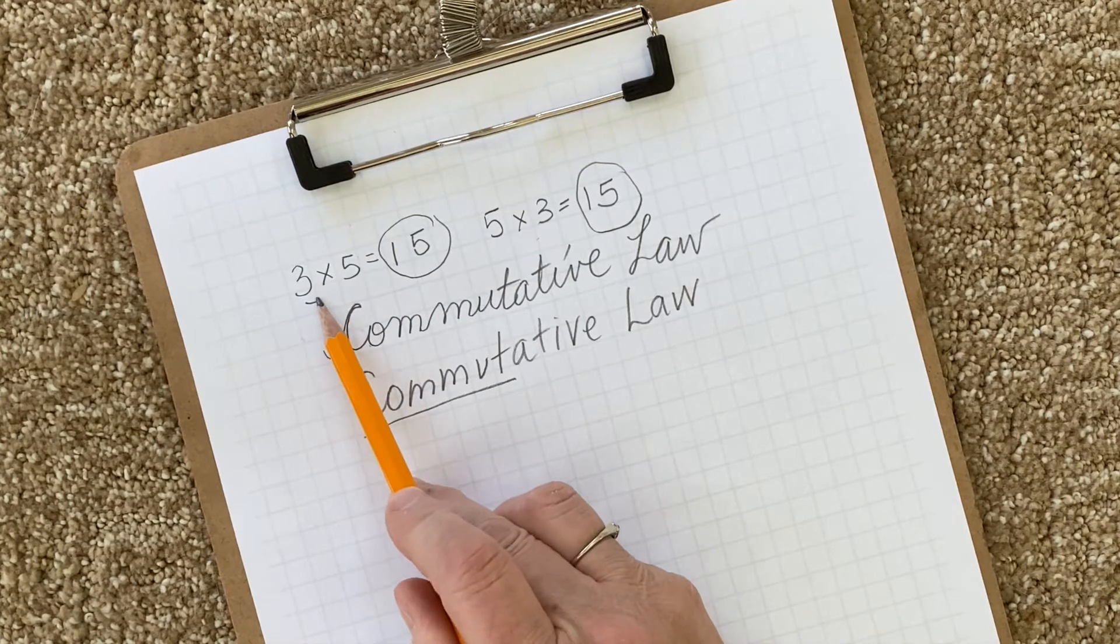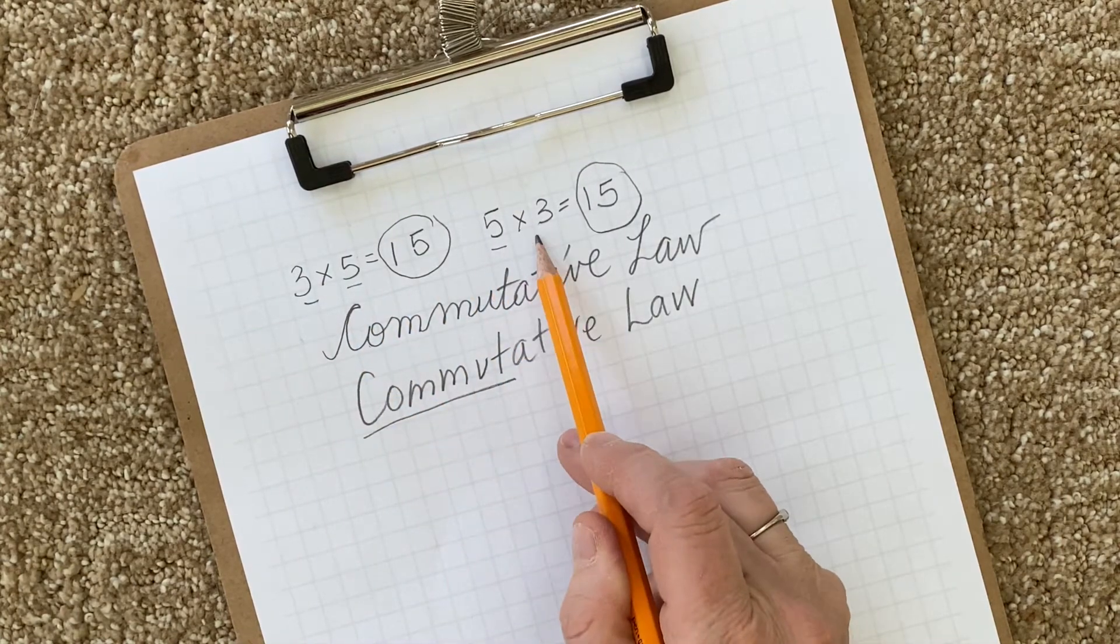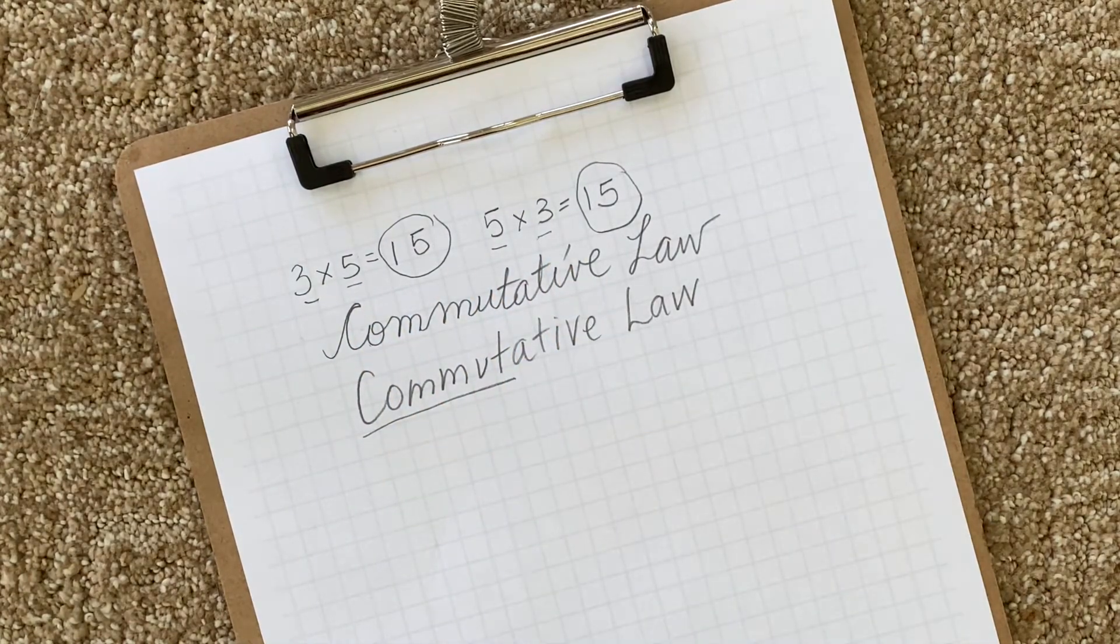In these examples, we have two numbers being multiplied together. Can you imagine what this might look like if you had more than two numbers being multiplied? Do you think the commutative law would still apply? Let's practice this and master it. And then we'll move on to that concept.